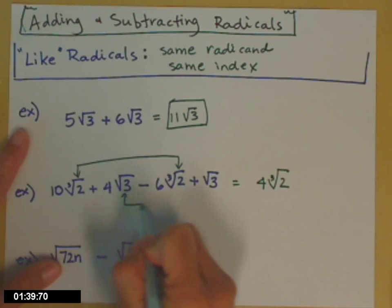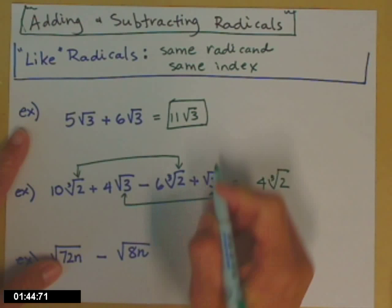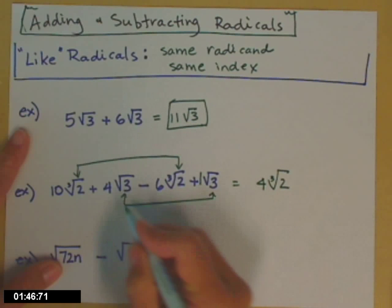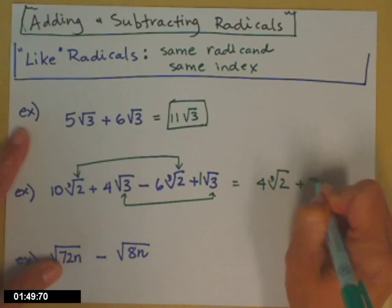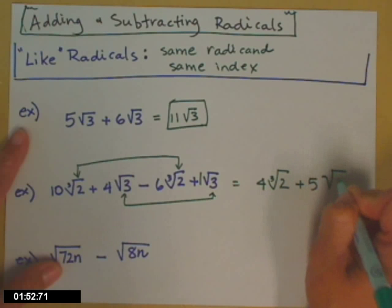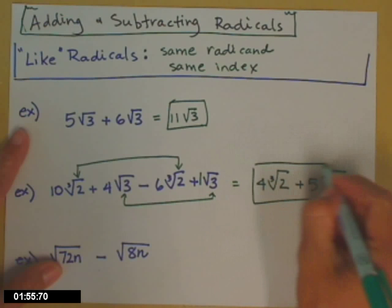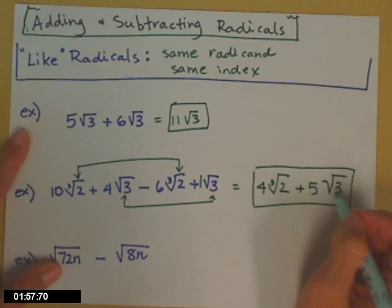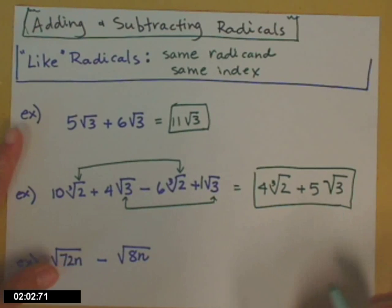The other two terms are like as well. 4 square roots of 3 plus — remember, if there isn't a number there, put a 1 if you'd like — 4 square roots of 3 plus 1 square root of 3 is 5 square roots of 3. You cannot add these two results together at this point because their radicands are not the same and their indices are not the same. It doesn't get any simpler than that.